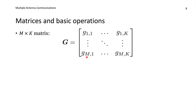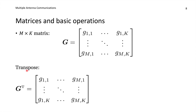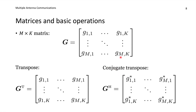In general, we can define complex matrices. An m times k matrix has m rows and k columns. Elements are written with subscripts: gm1 denotes the m-th row and first column, gmk denotes the m-th row and k-th column. The transpose of an m times k matrix is a k times m matrix obtained by flipping over the diagonal. The conjugate transpose applies both the transpose and conjugation to every element.